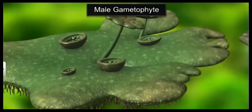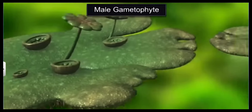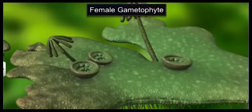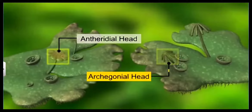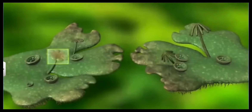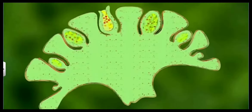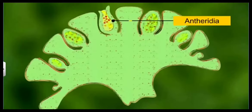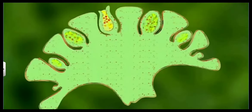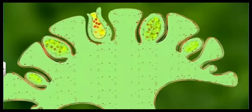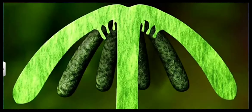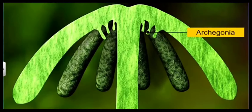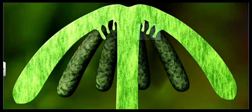There are two types of gametophytes: male gametophytes and female gametophytes. The male gametophytes produce anthridial head and female gametophytes produce archegonial head. The antheridia are the male reproductive parts of bryophytes which produce biflagellate antherozoids, whereas archegonia produce the egg.